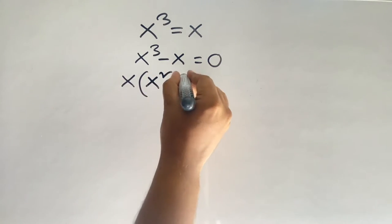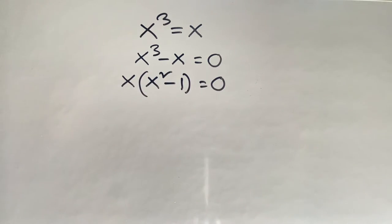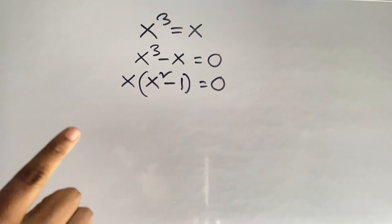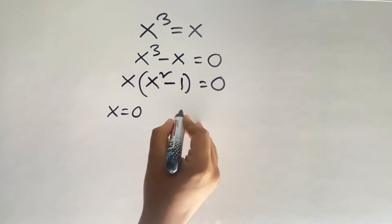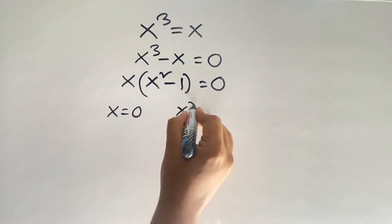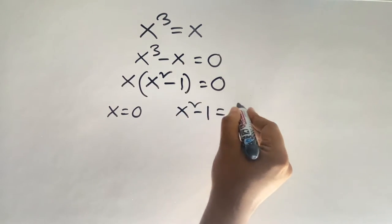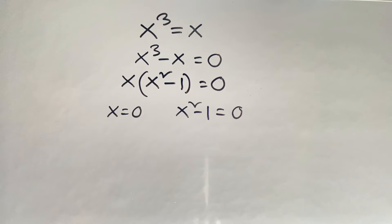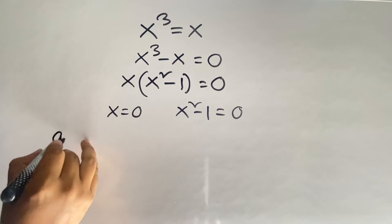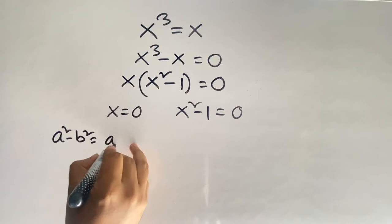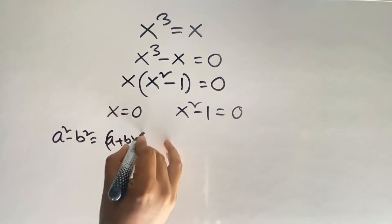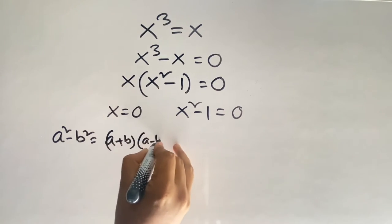This gives us two cases. The first case is x equals zero, and the other case is x squared minus one equals zero. Now we know that according to algebra rules, a squared minus b squared is equal to (a plus b) times (a minus b).